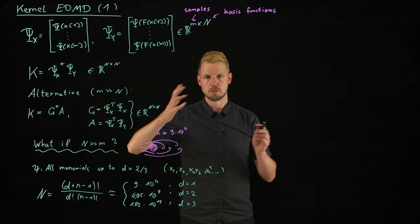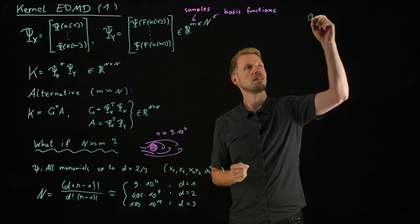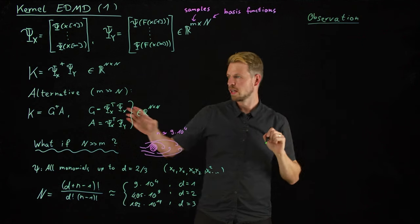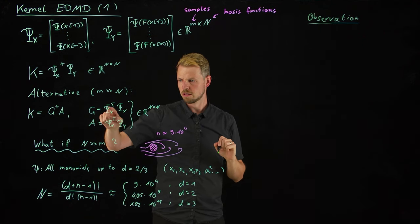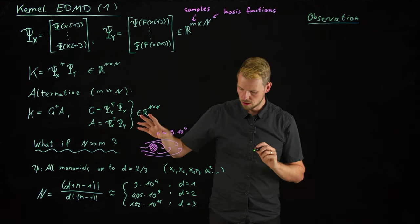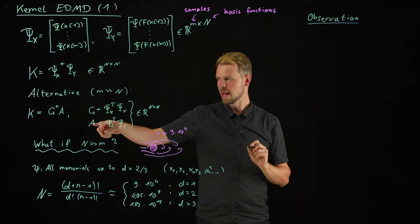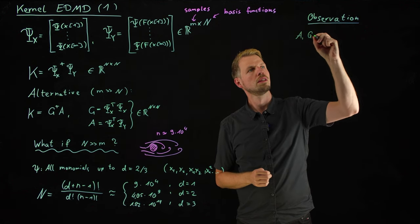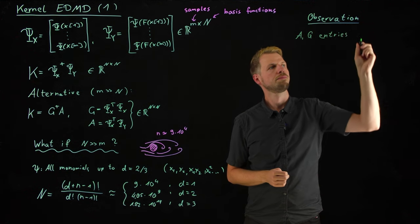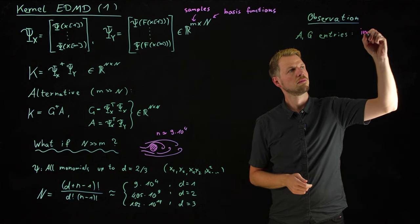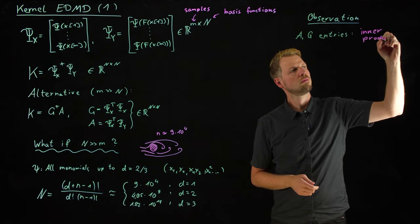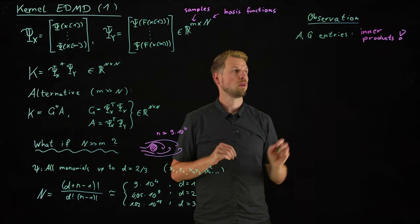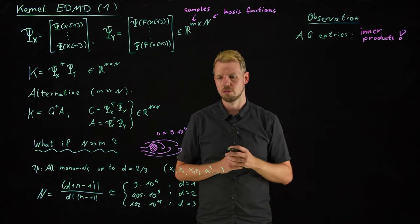But this is where kernel EDMD comes to the rescue, because let's observe one key thing. And this is what is really the most important part of this entire procedure. If you look at the A and G matrices here, this is Psi_X transpose Psi_X and this is Psi_X transpose Psi_Y. Then what we see is all of these entries of G and A are exclusively built up by inner products.